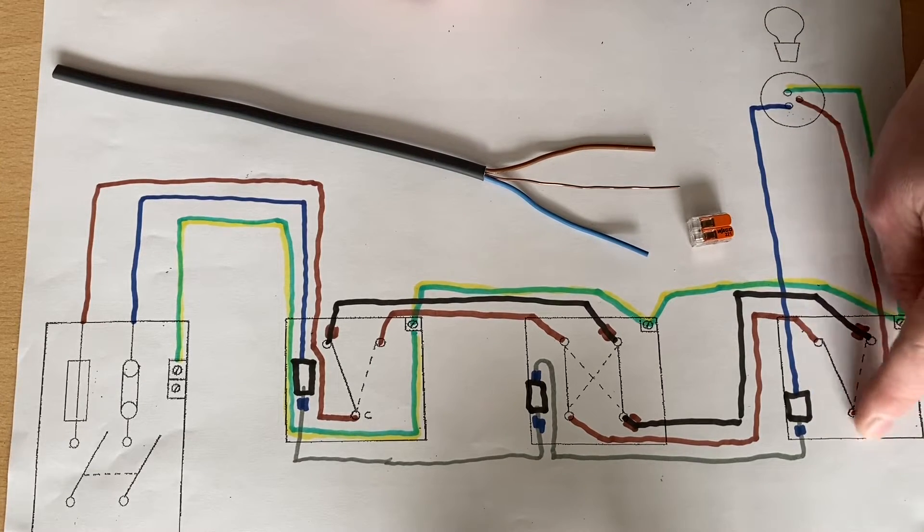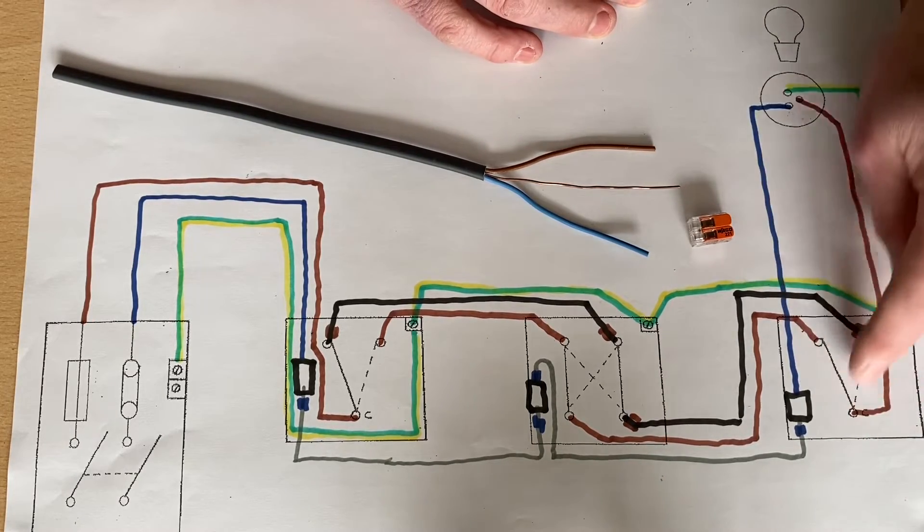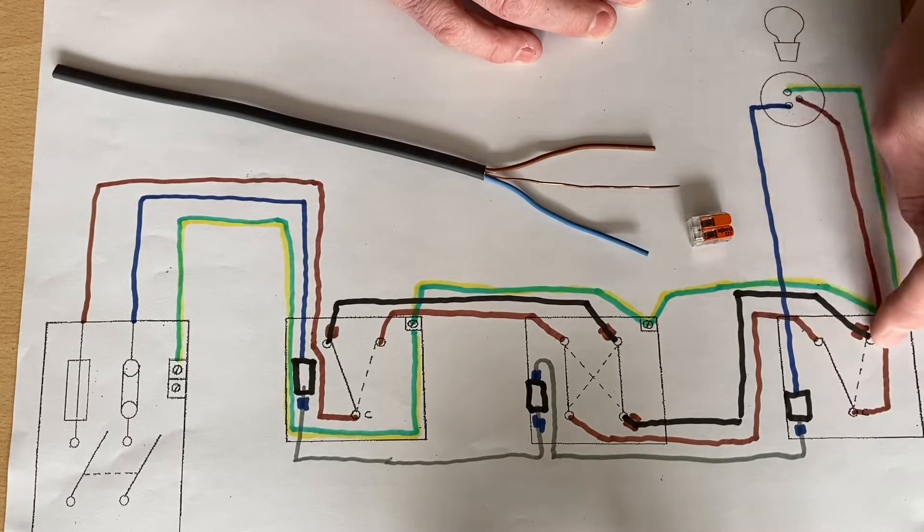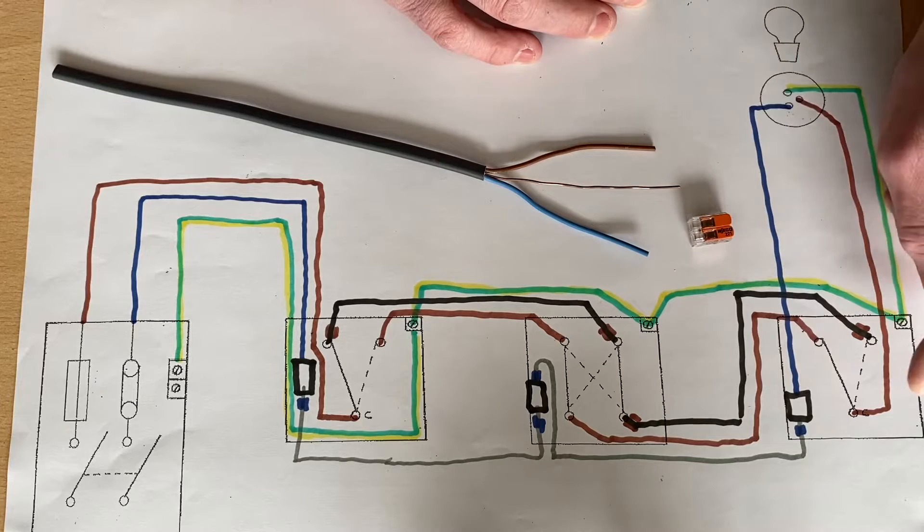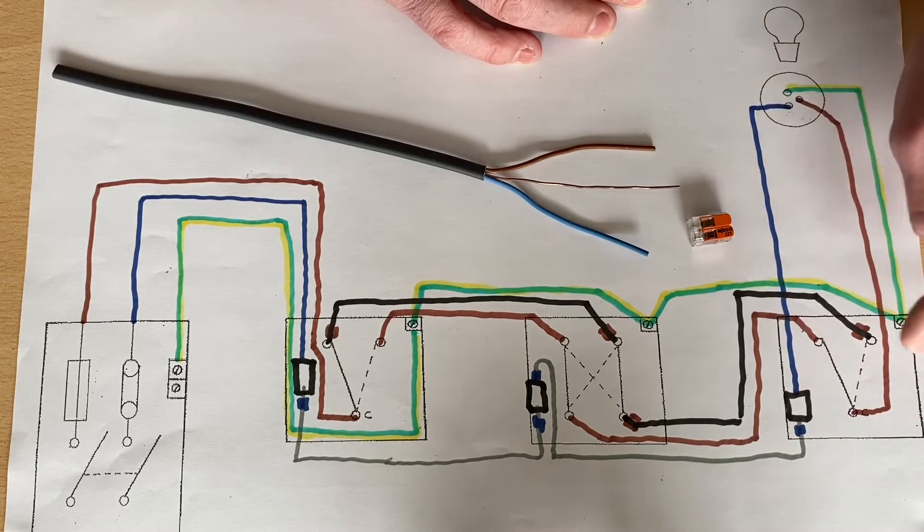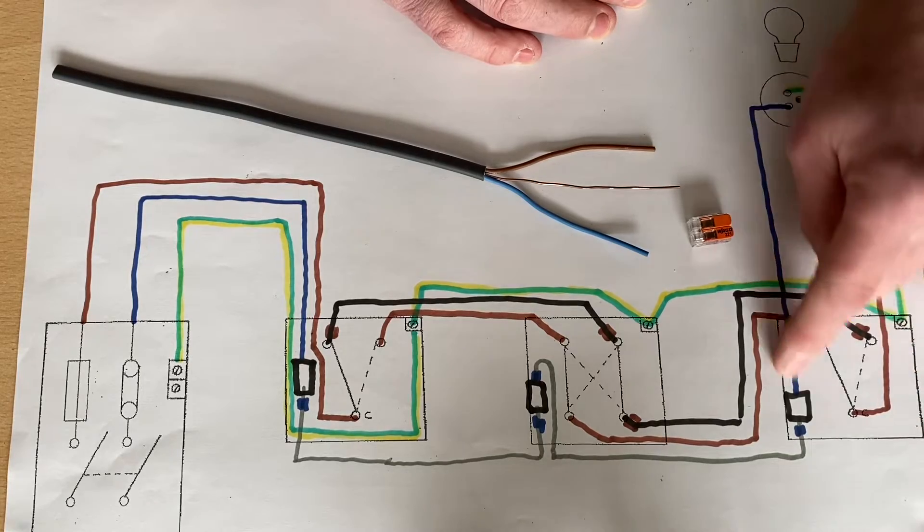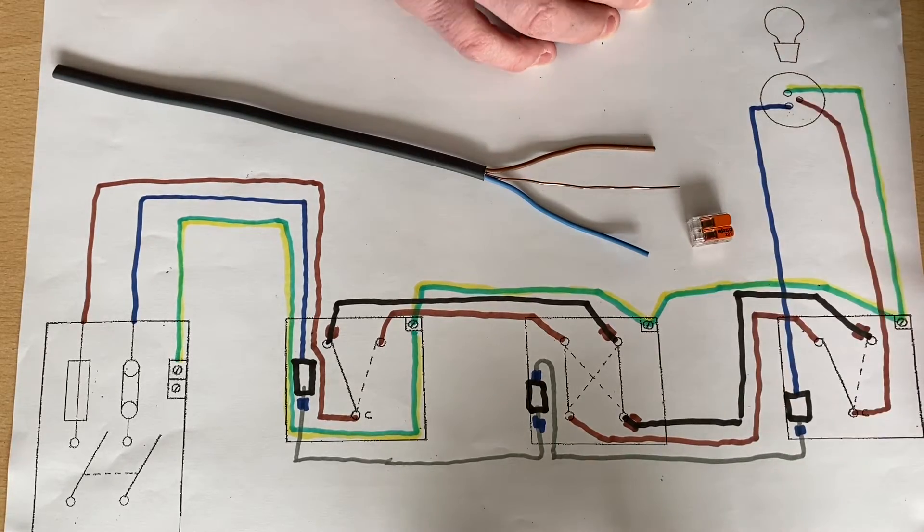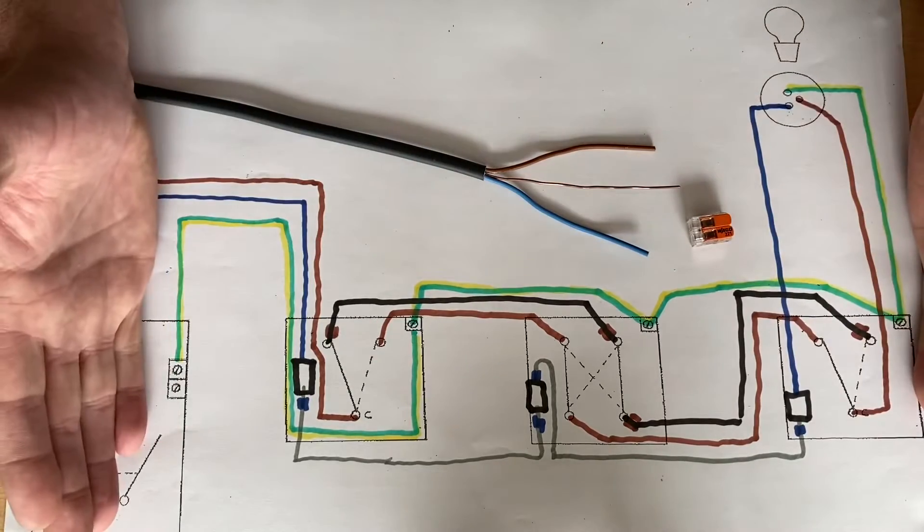Well, this one here will be only energised when the lighting point is on, and we can't guarantee that these will remain on at all times as we flick between our switching sequences. So therefore, you wouldn't be able to come out of this two-way light switch with a neutral, a CPC, and a permanent line connection to another room.